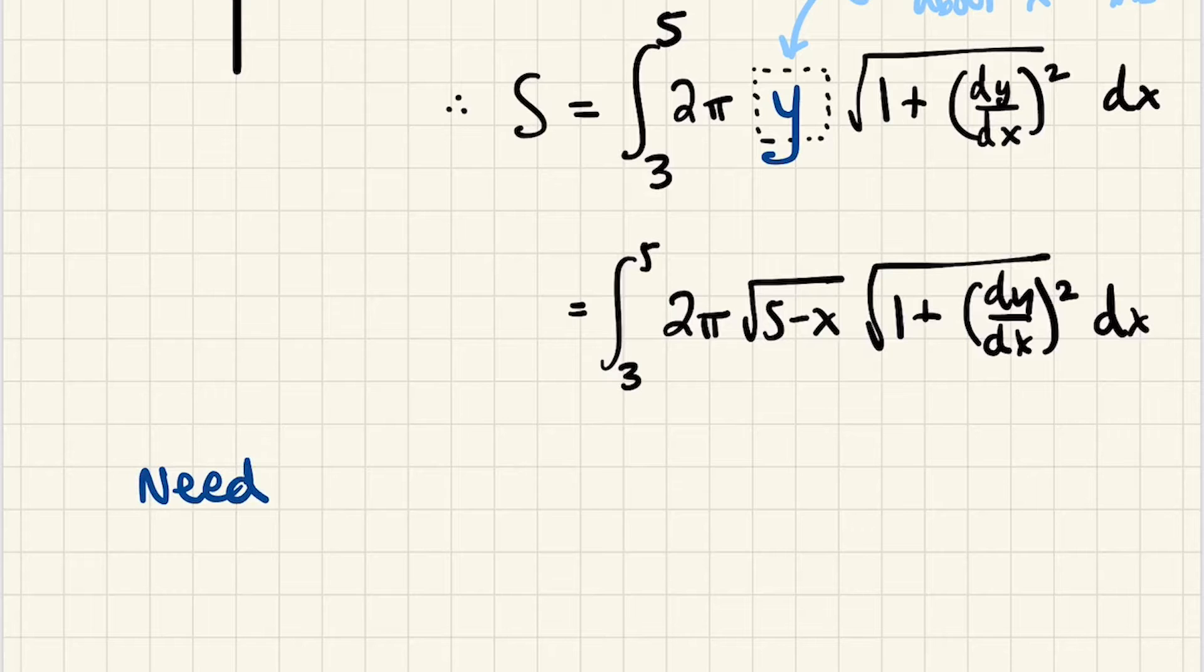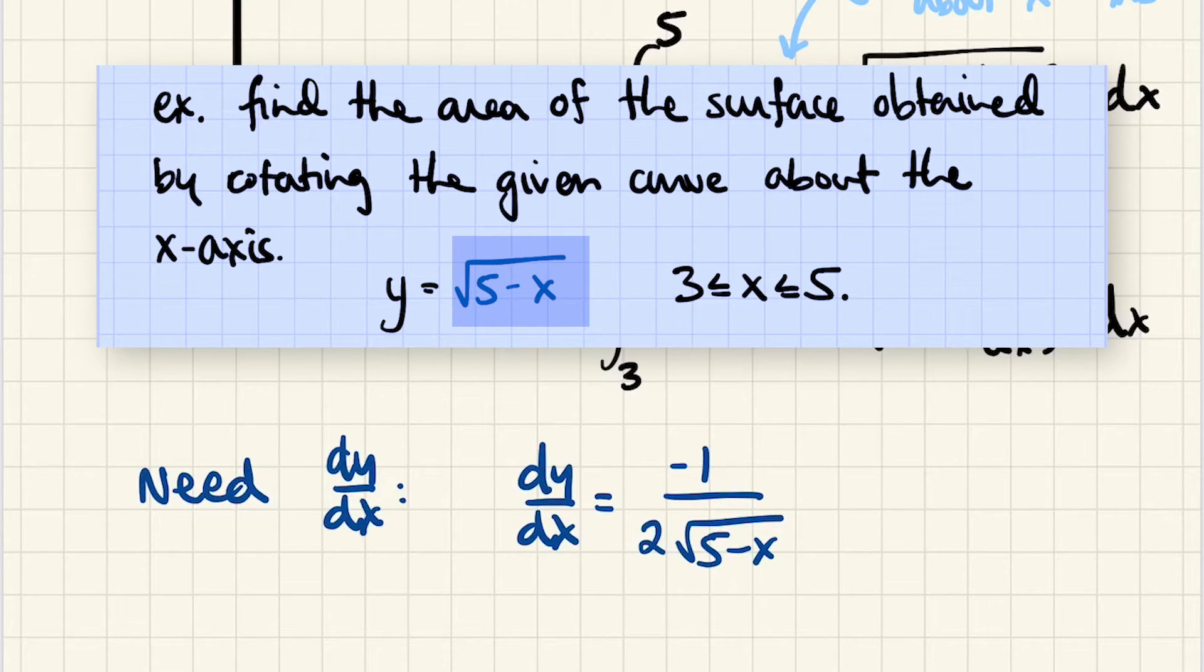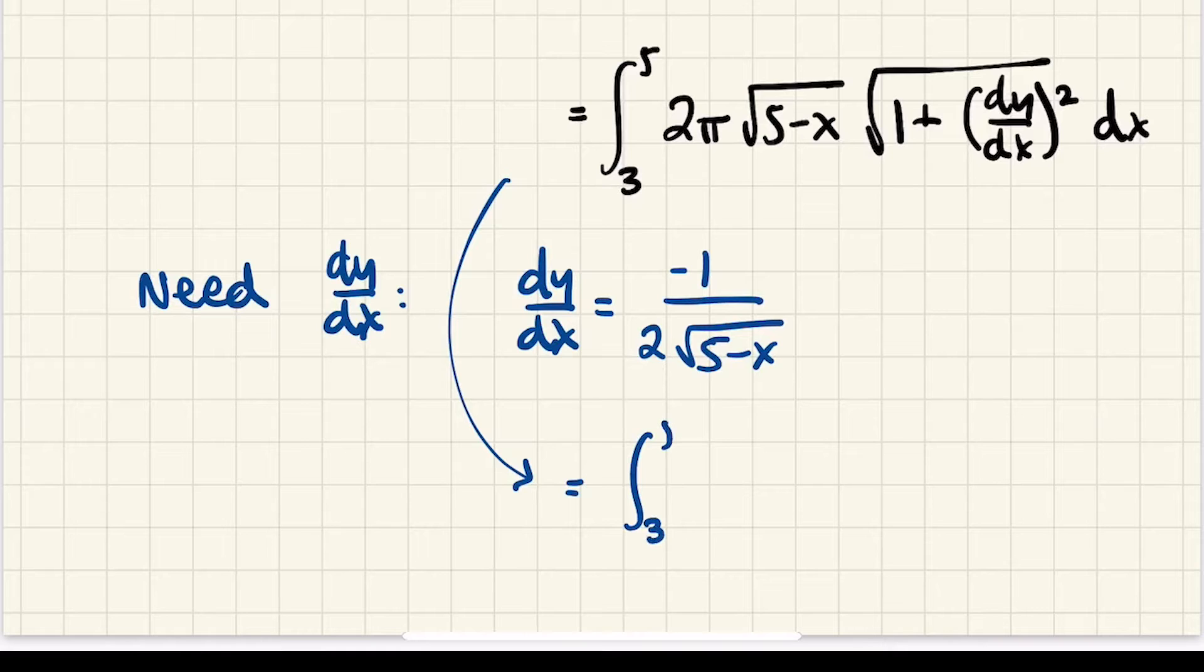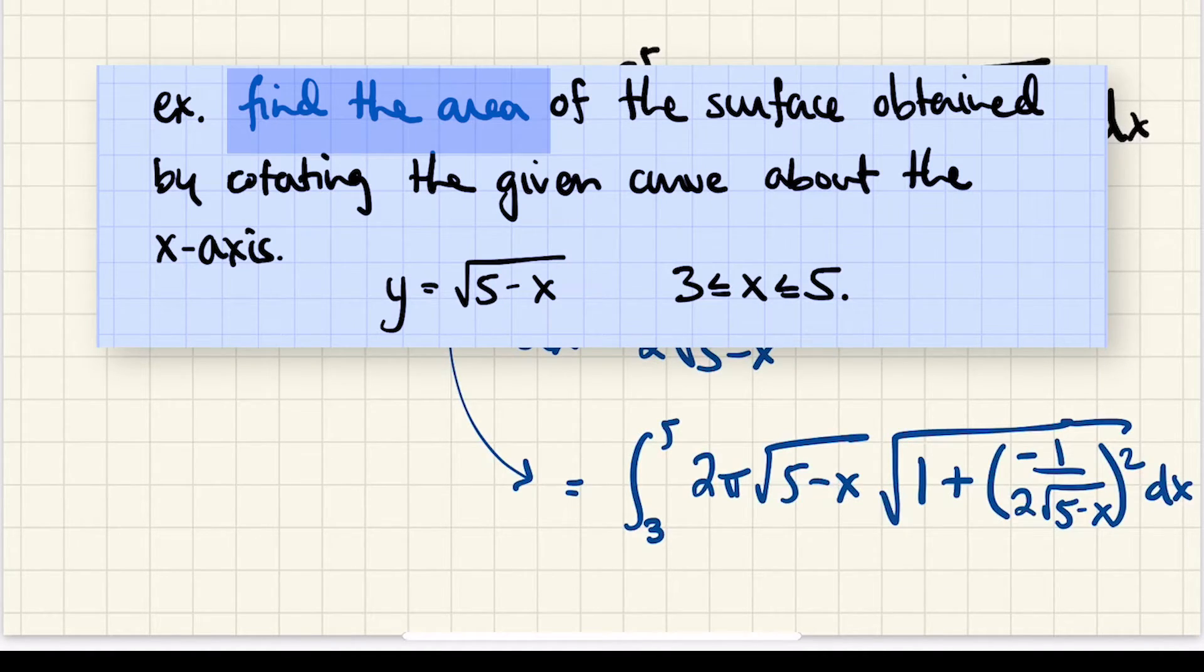So of course we need dy dx. So dy dx is the derivative of the square root of 5 minus x, so that would be 1 over 2 times the square root of 5 minus x, but then chain rule, so one more negative comes out. So there's our derivative, which means that our integral is the integral from 3 to 5 of 2 pi times 5 minus x, 1 plus this thing squared dx. And if this were a setup only problem, that is where we would stop. It actually said to find the area, so let's finish this problem.